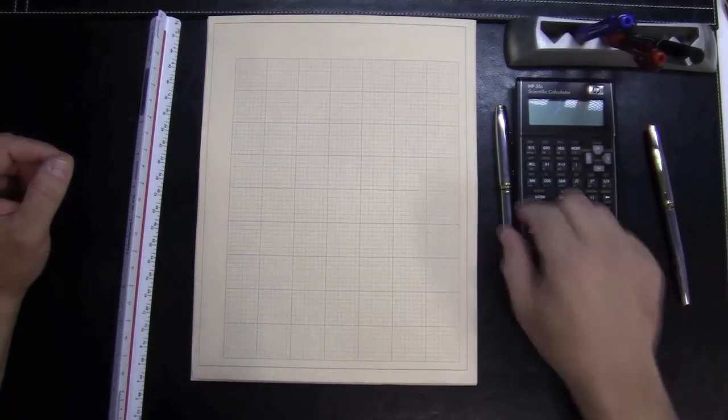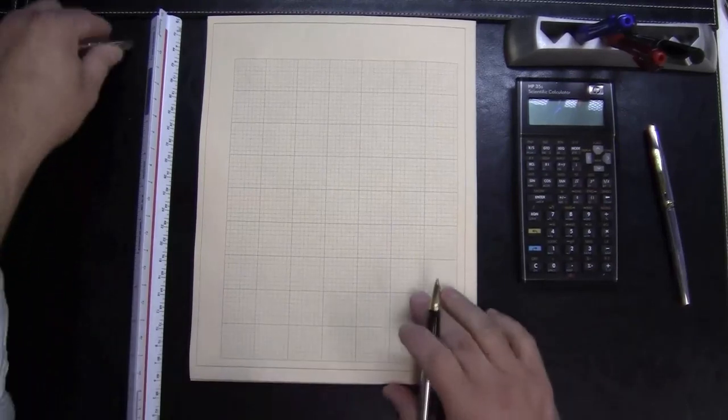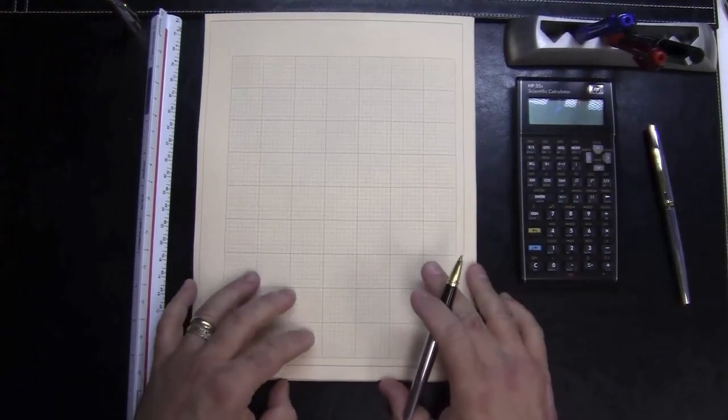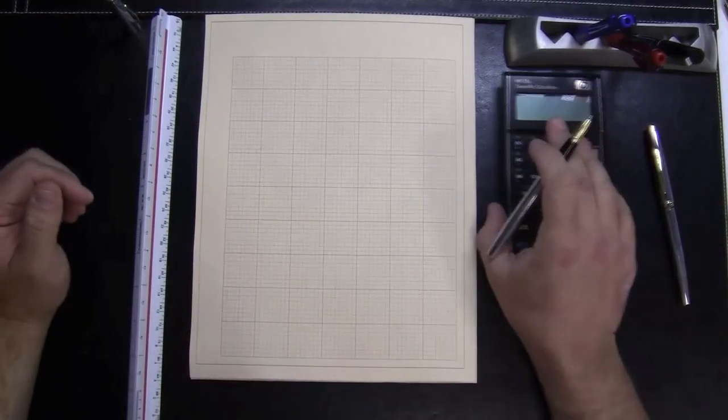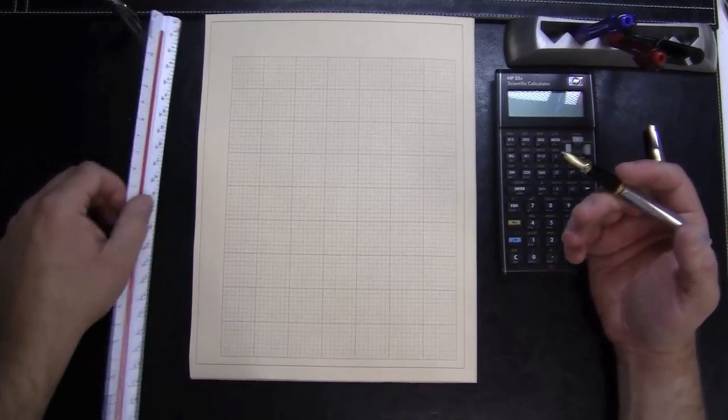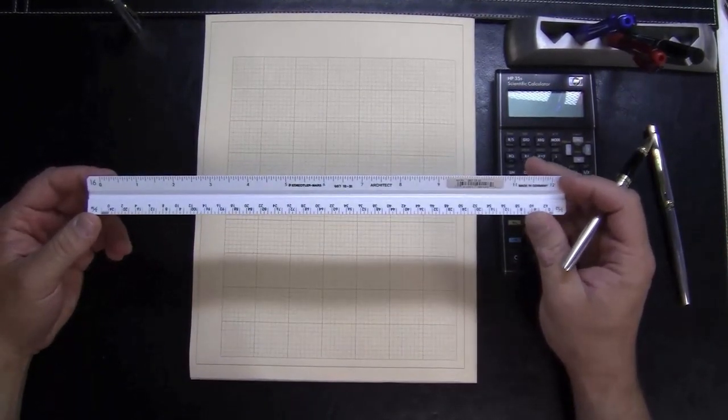Welcome back. In this exercise, I'm going to go through some of the key features of staged construction and some things to think about when we're looking at the sequential loading of structures and points to consider. For this, we're going to look at a basement retaining wall system.